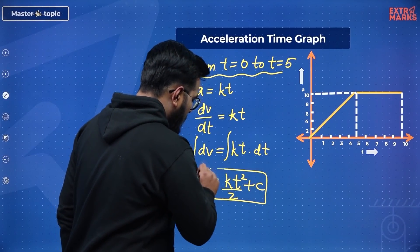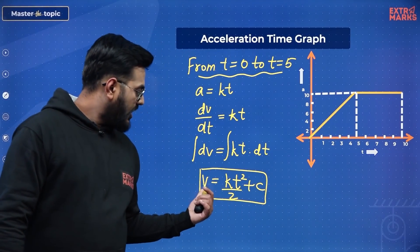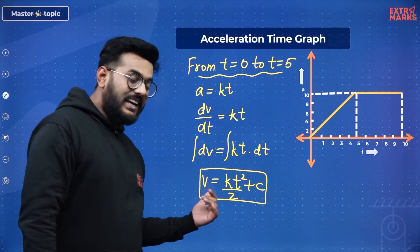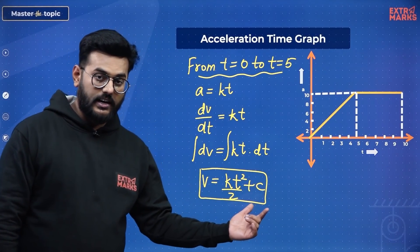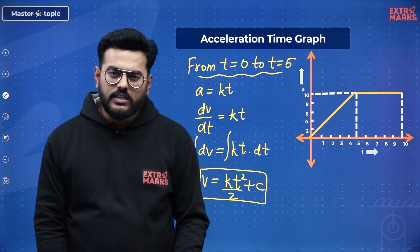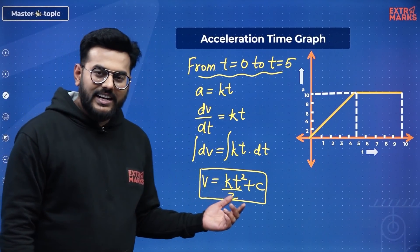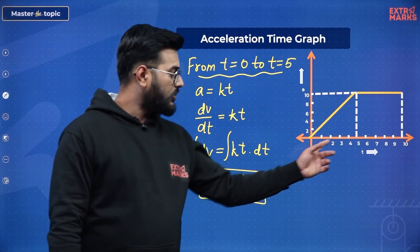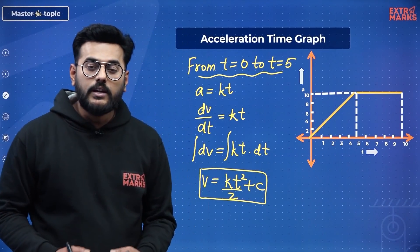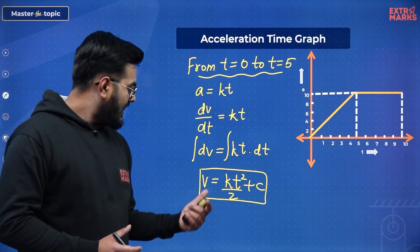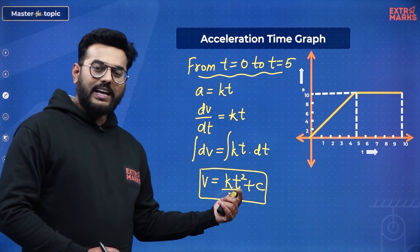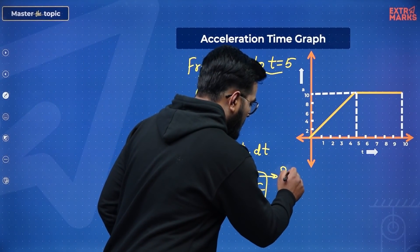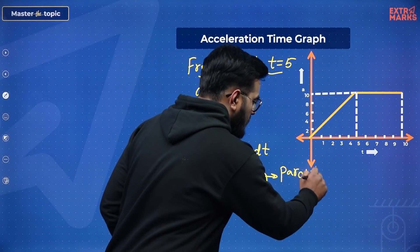This is the general relation between V and T. I'm not interested in the exact relation — just the general sense. With this, I can tell that the curve between V and T for the initial segment (T = 0 to T = 5) will be a parabolic curve, similar to the pattern X² = 4AY.